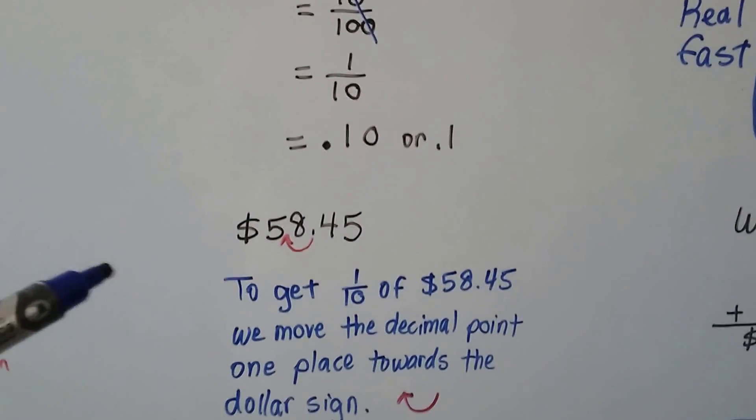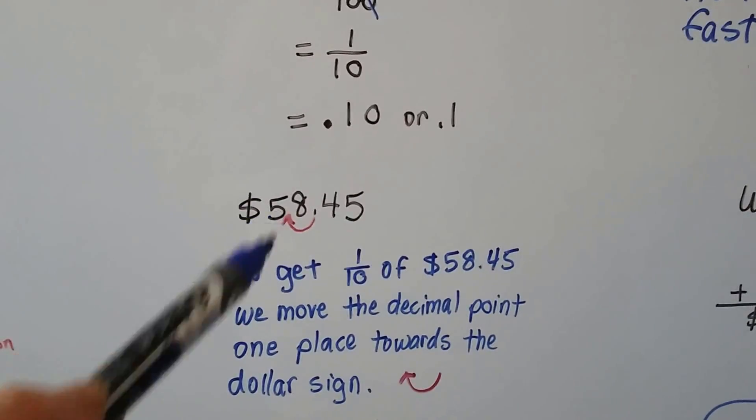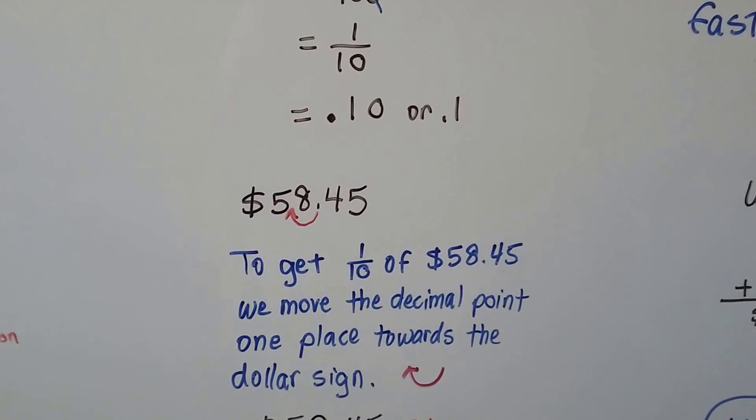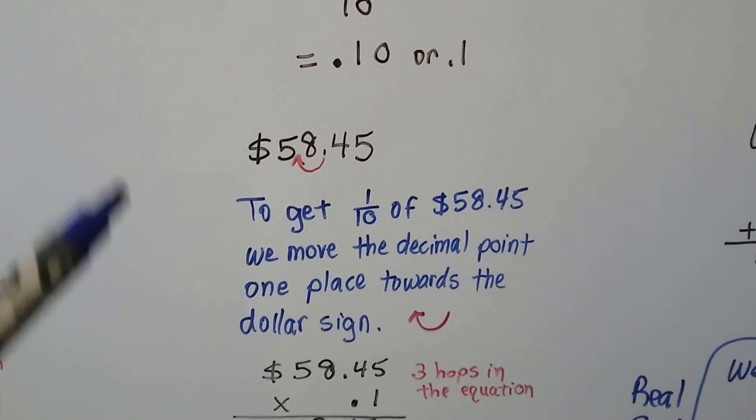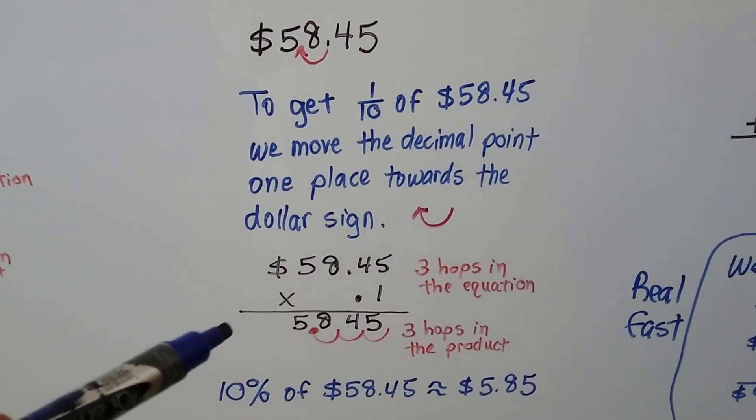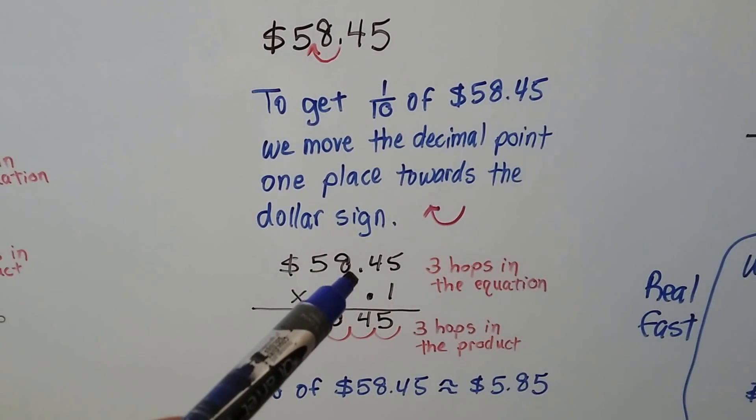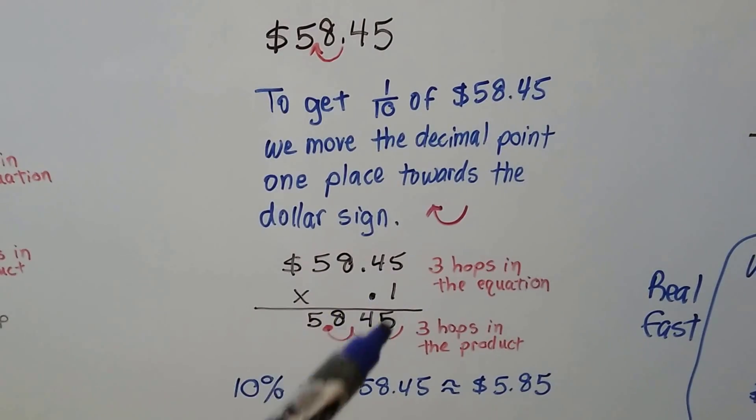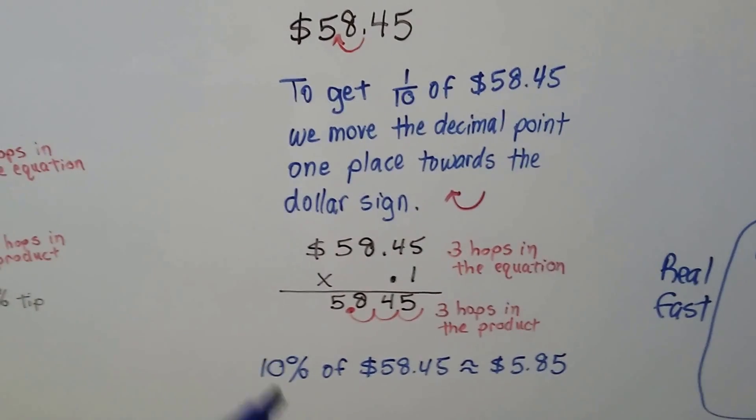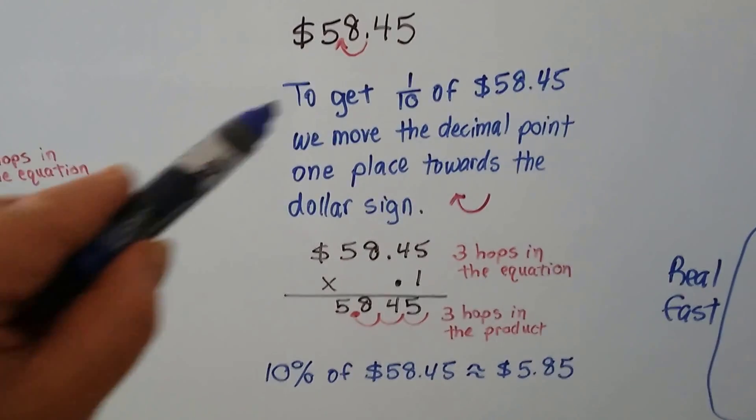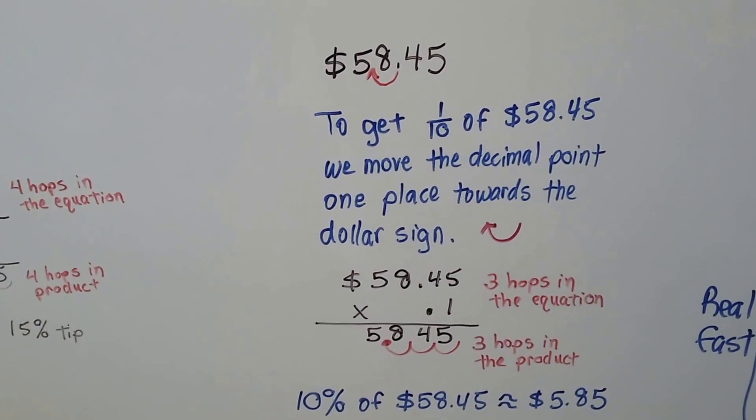So, all we have to do to get one-tenth of $58.45 is move that decimal place one space, one place value, towards the dollar sign. We get $5.85 when we round this off. If we did it the slow way, we would do $58.45 times .1, we'd still get about $5.85. That's 10%, alright? So, all we have to do is move that decimal place over one spot towards the dollar sign to get 10%.